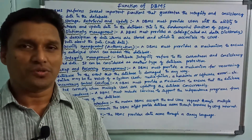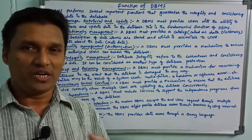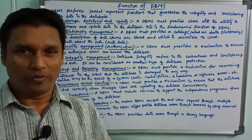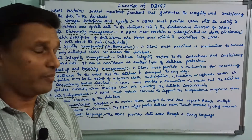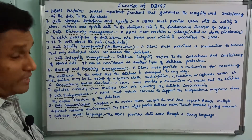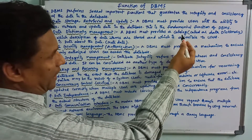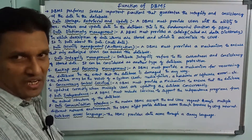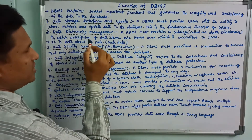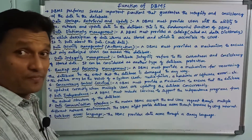The second function is data dictionary management. DBMS must provide a catalogue — also called a data dictionary — in which descriptions of the data items are stored and which is accessible to users.